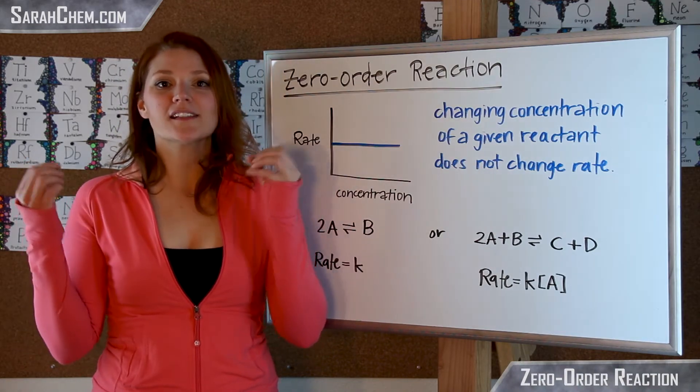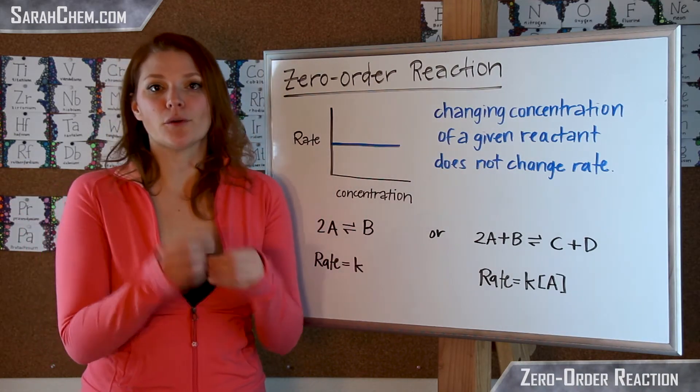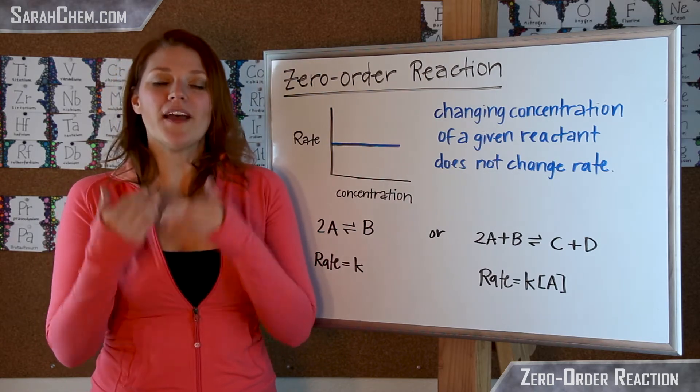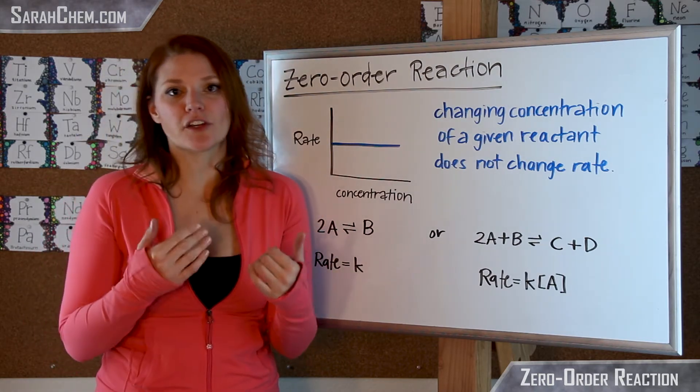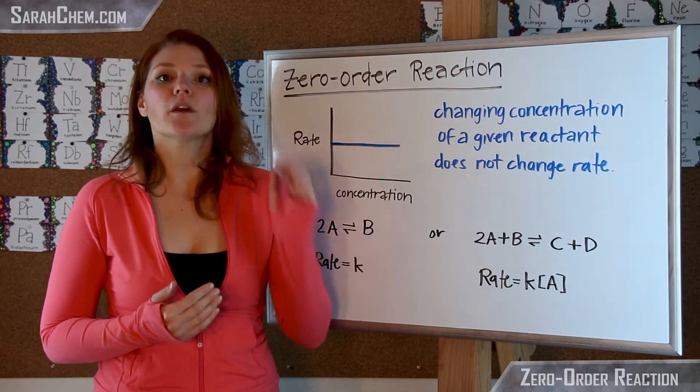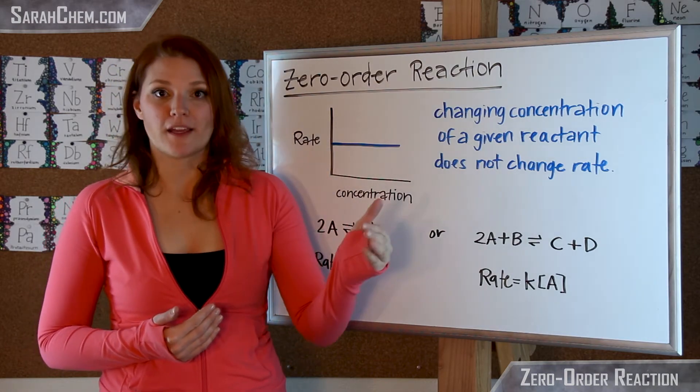When it is said that a reactant is zero order with respect to the rate, what that means is no matter how I change the concentration of a given reactant, there will be no change in the overall rate.